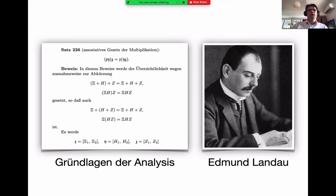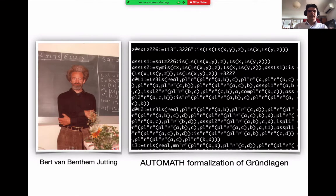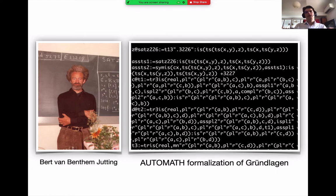I ended up doing a PhD in logic, so I wasn't really listening that well. I later learned that the formalization was carried out by Bert Jutting from the Netherlands. He used the Automath proof checker, and this was in the 1970s. The source code was luckily preserved by Freek Wiedijk, who also re-implemented Automath in C in the 90s. So we can still verify Landau's book using the original formalization of Jutting today, and it's instant — you press enter and the machine says the whole book is correct.